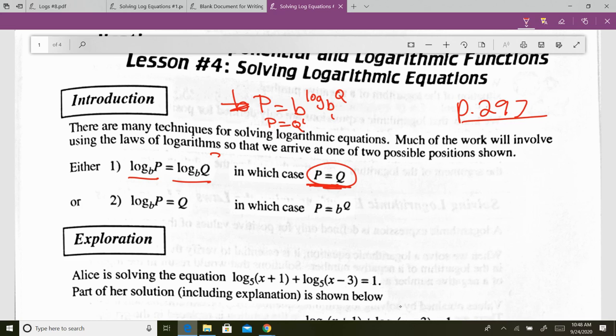The other type is when you have a log equaling a number. This is a number. You change to exponential form. And I'll just say up here, equate the arguments. Those are the only two types we'll look at. Now, they will come in all sort of different shapes and sizes, and we have to make them look like that before we can solve them.